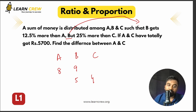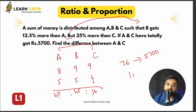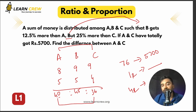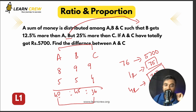Use the house occupation method: multiply across. A = 8×5 = 40, B = 9×5 = 45, C = 9×4 = 36. A and C together = 40+36 = 76 parts = ₹5,700. One part = 5700 ÷ 76 = ₹75. Difference between A and C = 4 parts = 4×75 = ₹300.